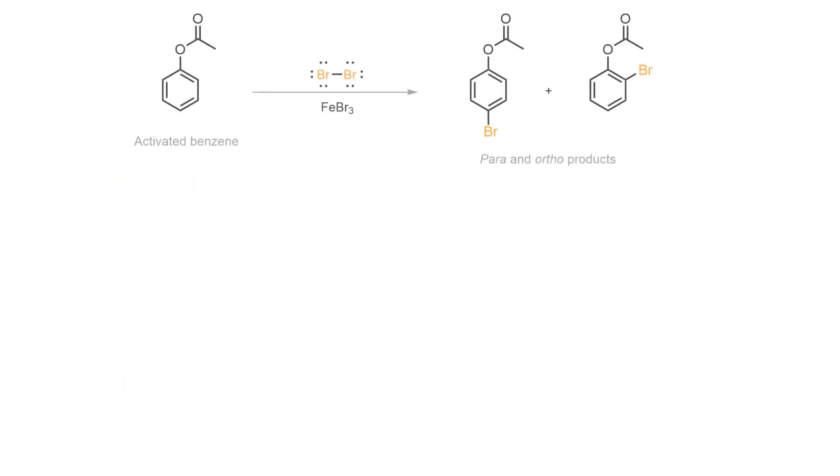Overall, phenol acetate reacts as an activated benzene system. When treated with bromine and the Lewis acid catalyst, the para- and ortho-substitution products are formed via the most stabilized carbocations.